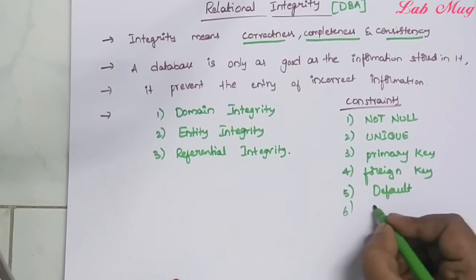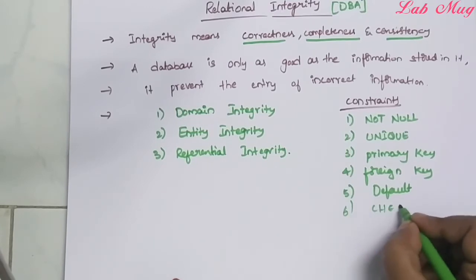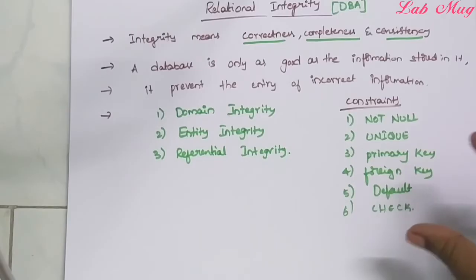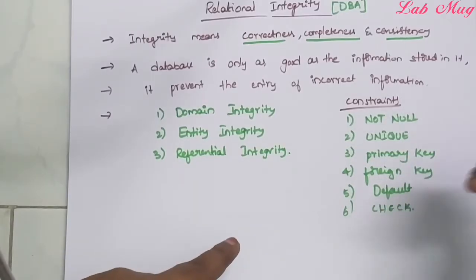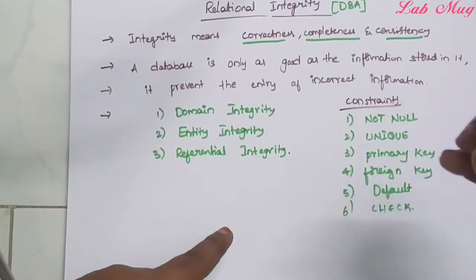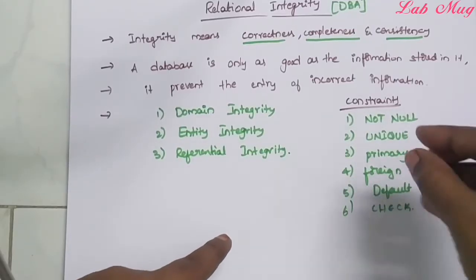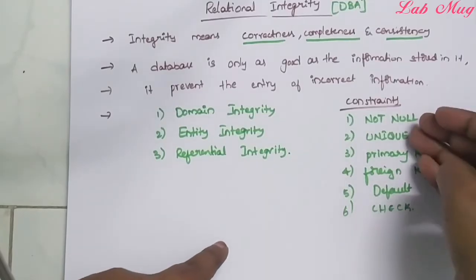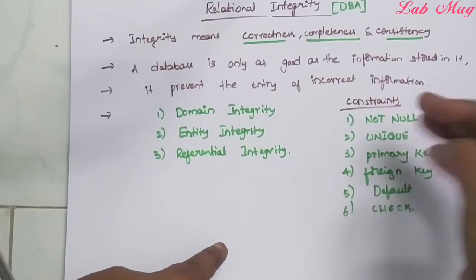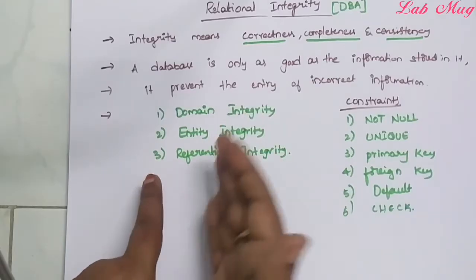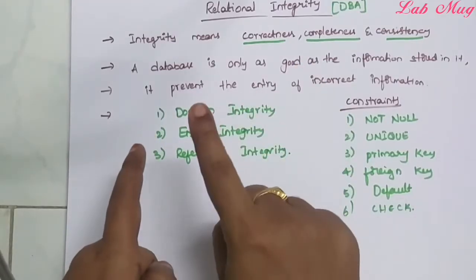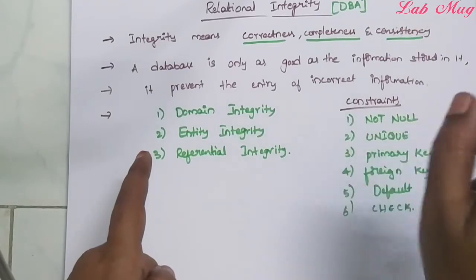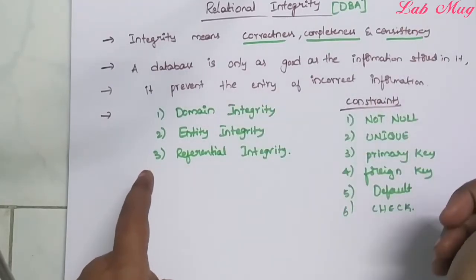Another constraint is check. So in total there are six constraints available. The six constraints are: not null constraint — which does not accept null values; unique — which accepts only unique values and no duplicate values; primary key; foreign key; default; and check. Each and every constraint has its own purpose. Using these, we maintain domain integrity, and maintain correctness, completeness, and consistency.